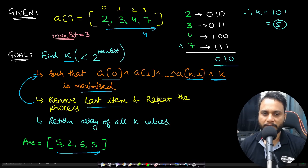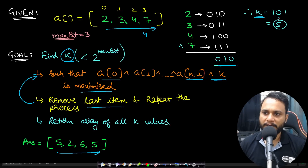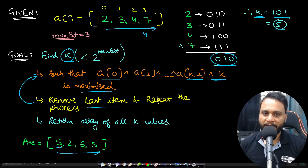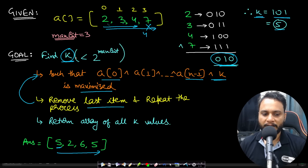In the first query we find the XOR of all numbers: 2 XOR 3 XOR 4 XOR 7, which gives 0, 1, 0 (i.e., 2). Now I find k less than 8. If I pick k = 1, 0, 1 (which is 5), I get the maximum XOR value when XORed with 0, 1, 0. So answer[0] = 5. In the next query I remove 7 and find the XOR of 2 XOR 3 XOR 4, then try all possible k values to find the maximum — the answer there is 2. This is how the answer array is built.